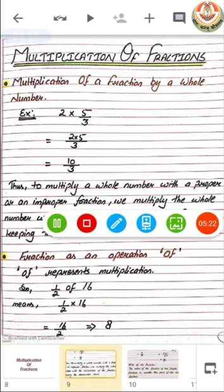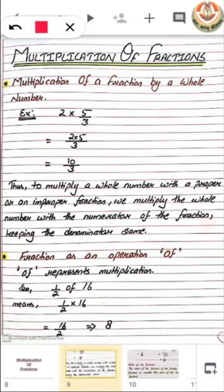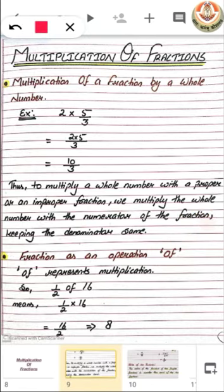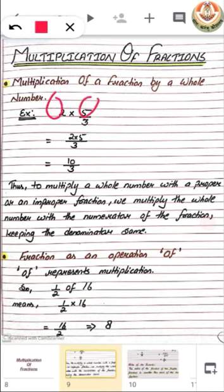Multiplication of fractions. We know that first is multiplication of a fraction by a whole number. It is very easy — we just have to write 1 in the denominator of the whole number to get 2 fractions to multiply, or we just multiply the whole number with the numerator and keep the denominator common. Here 2 is multiplied with 5 and 3 is the common denominator, so we get our answer 10 by 3.